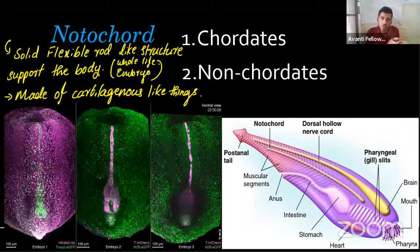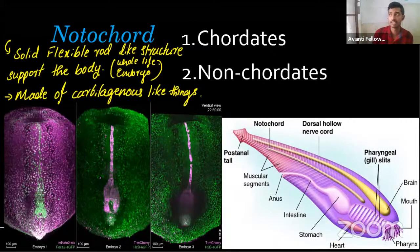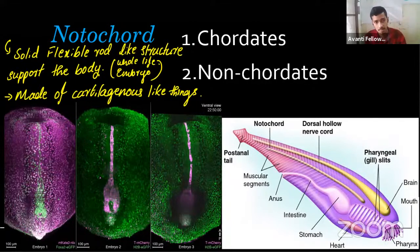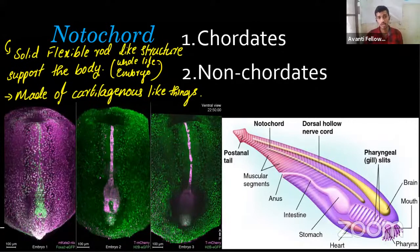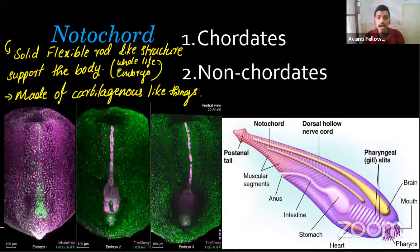In very few organisms — like urochordates and cephalochordates — the notochord remains for the whole life or in part. In others it is only present in the embryo stage, and later it is replaced by the vertebral column. The notochord is made up of cartilaginous-like material — not actual cartilage, but a type called hyaline cartilage.